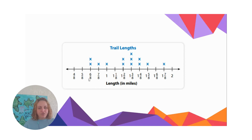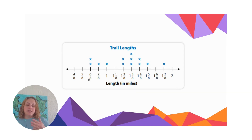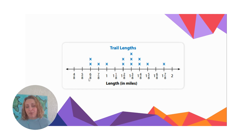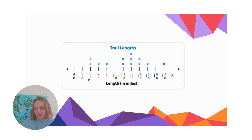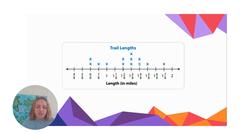They don't have to label every dash, because on number lines each dash is always going to be the same interval or distance apart. In this case it's all labeled, so that makes it a lot easier for us to read. We also know about line plots that each of these x's represents a data point.